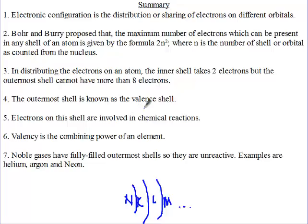The outer shell is what we know as the valent shell. Electrons on this shell are involved in chemical reactions. When we say valency, we're talking about the combining power of an element.